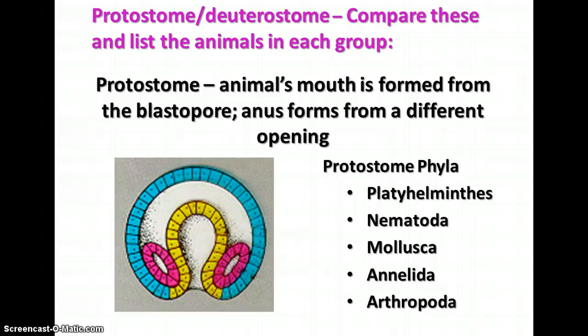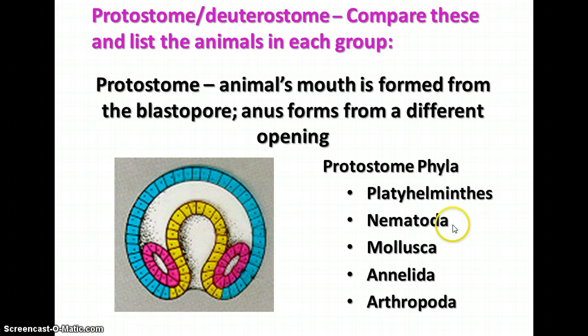There are two main groups of animals called protostomes and deuterostomes. In the protostomes, the animal's mouth is formed from the blastopore — the original opening of the gastrula — and the anus forms from a different opening as this pushes through, making a tube within a tube. Several phyla of animals fall into this category: Platyhelminthes (flatworms), Nematoda (roundworms), Mollusca, Annelida, and Arthropods. We'll talk about each one of these in turn.